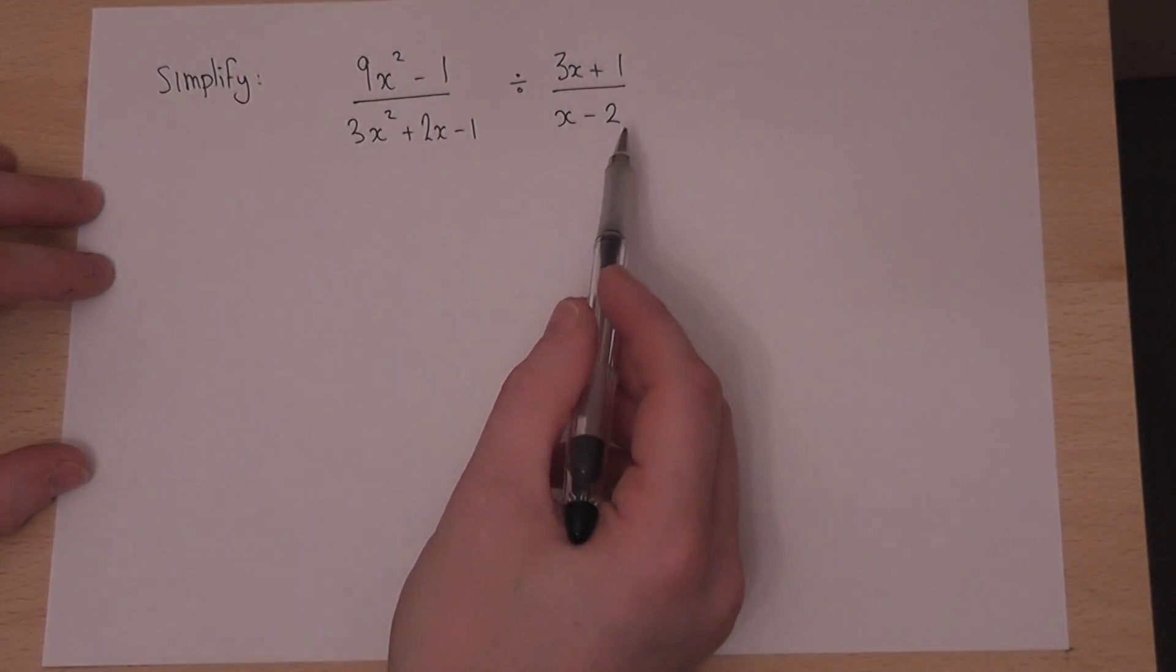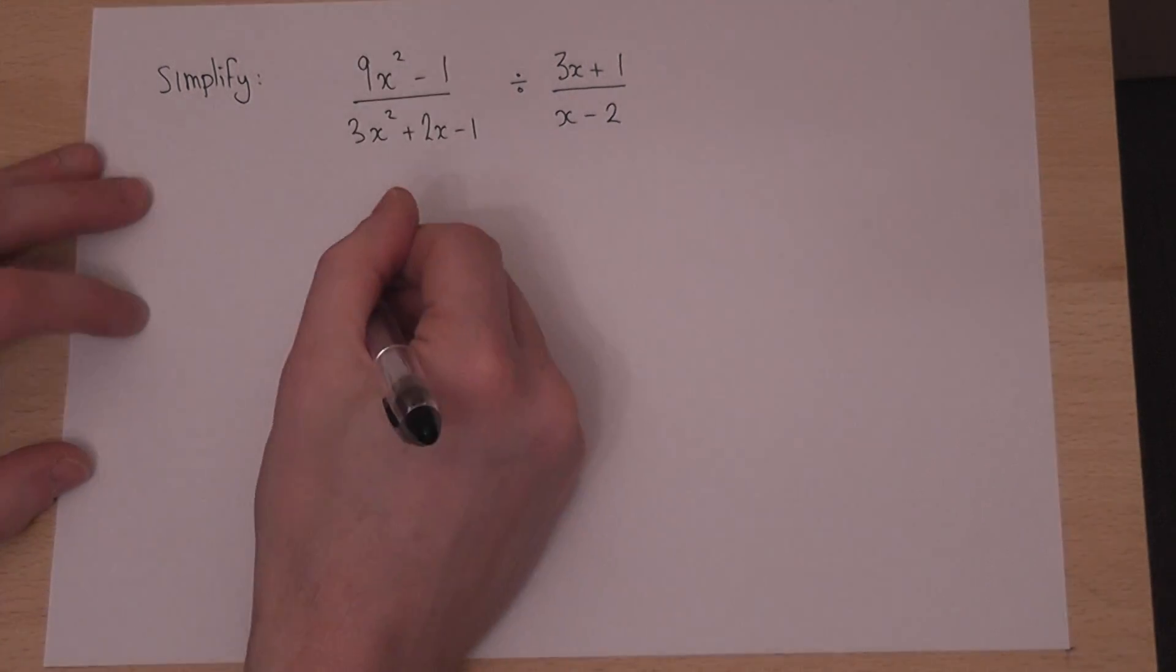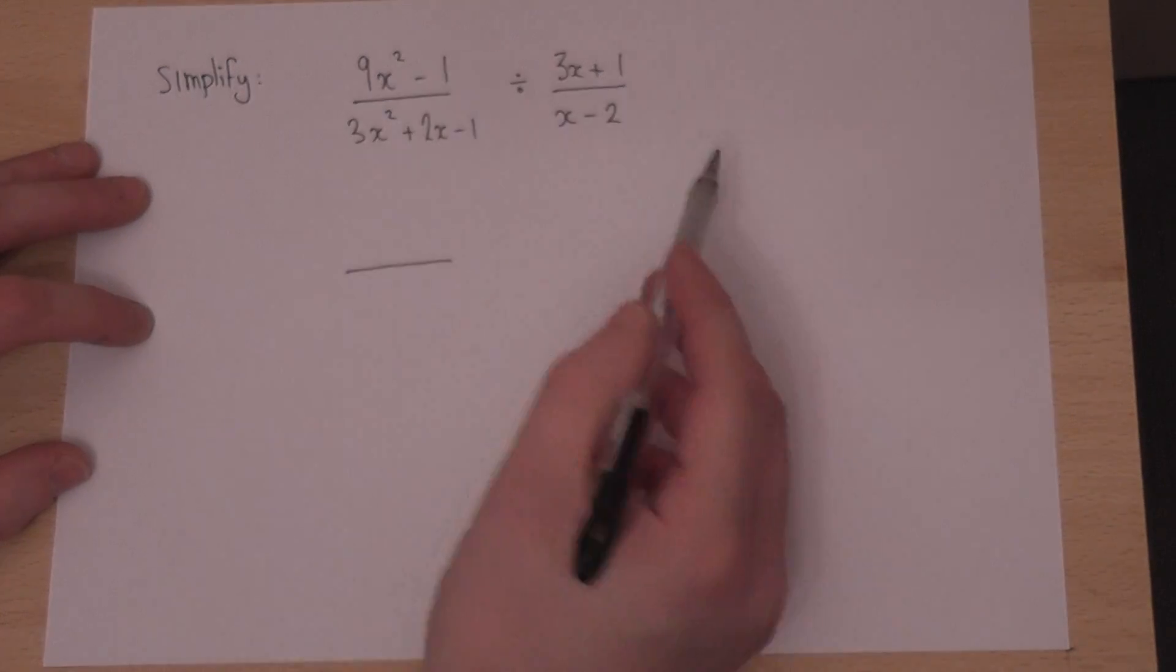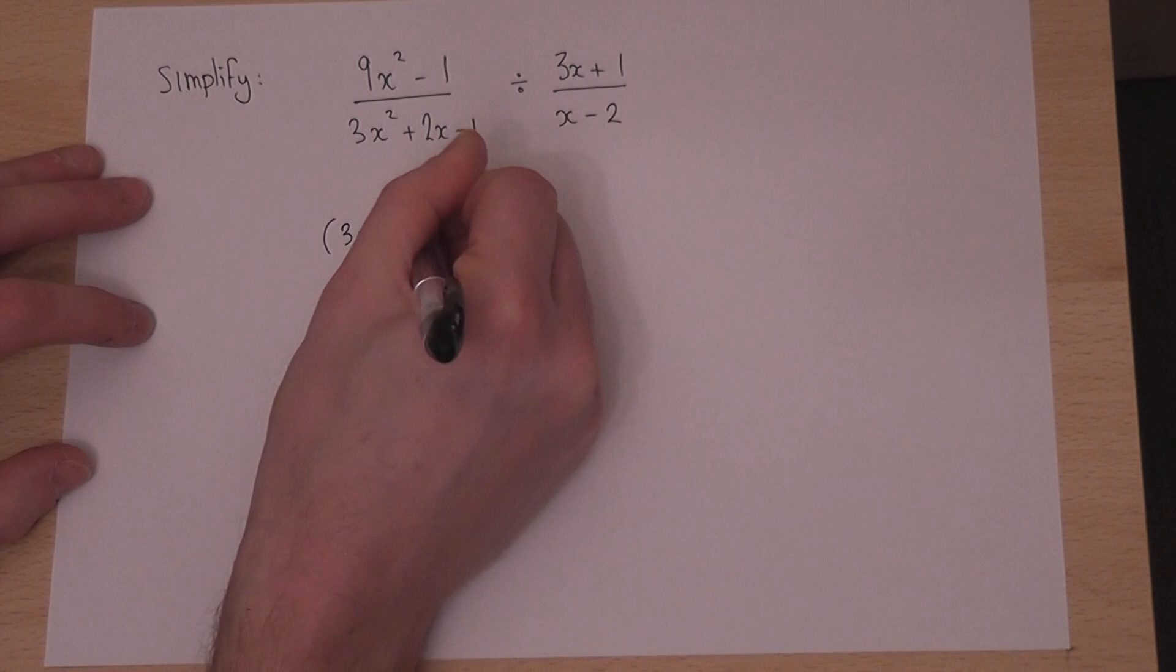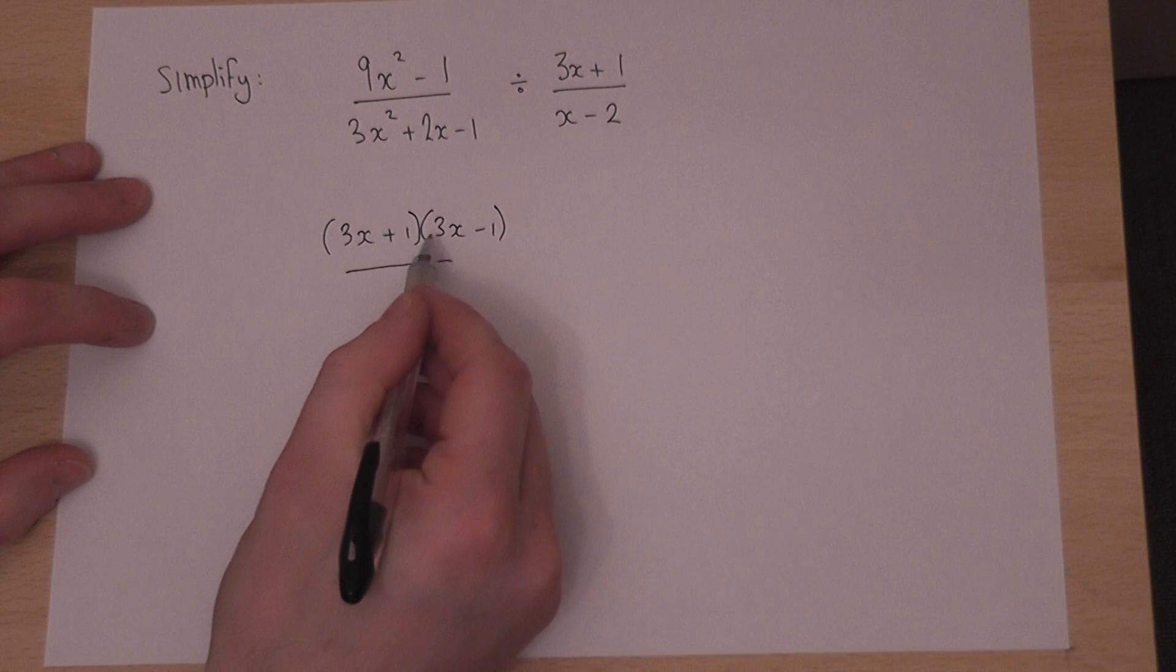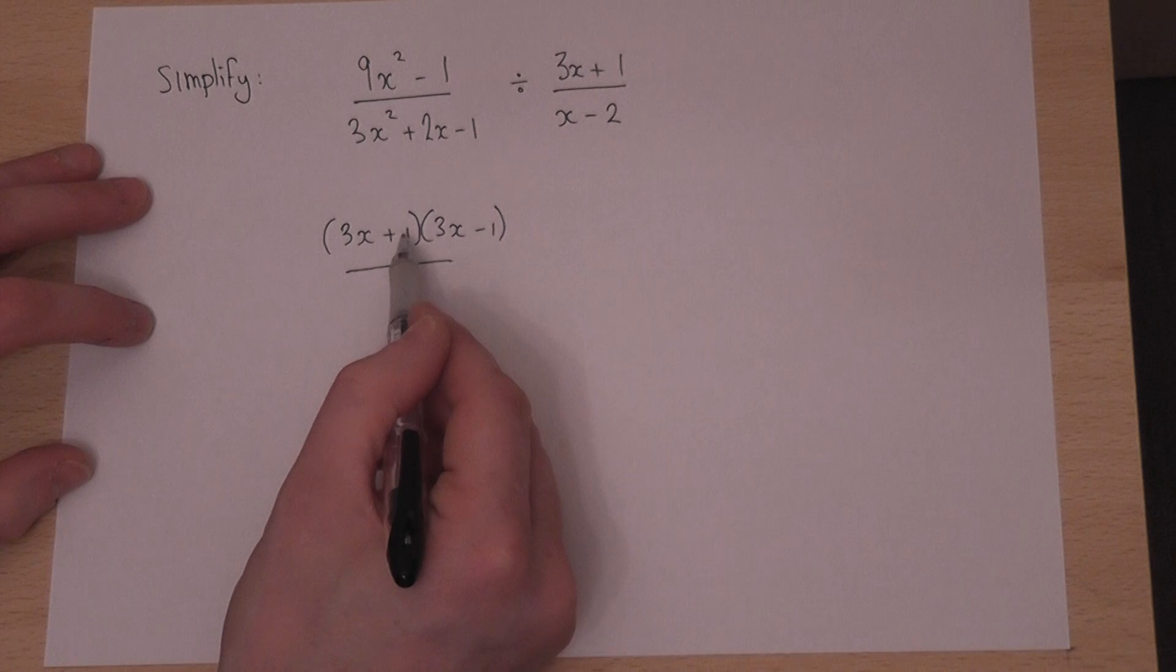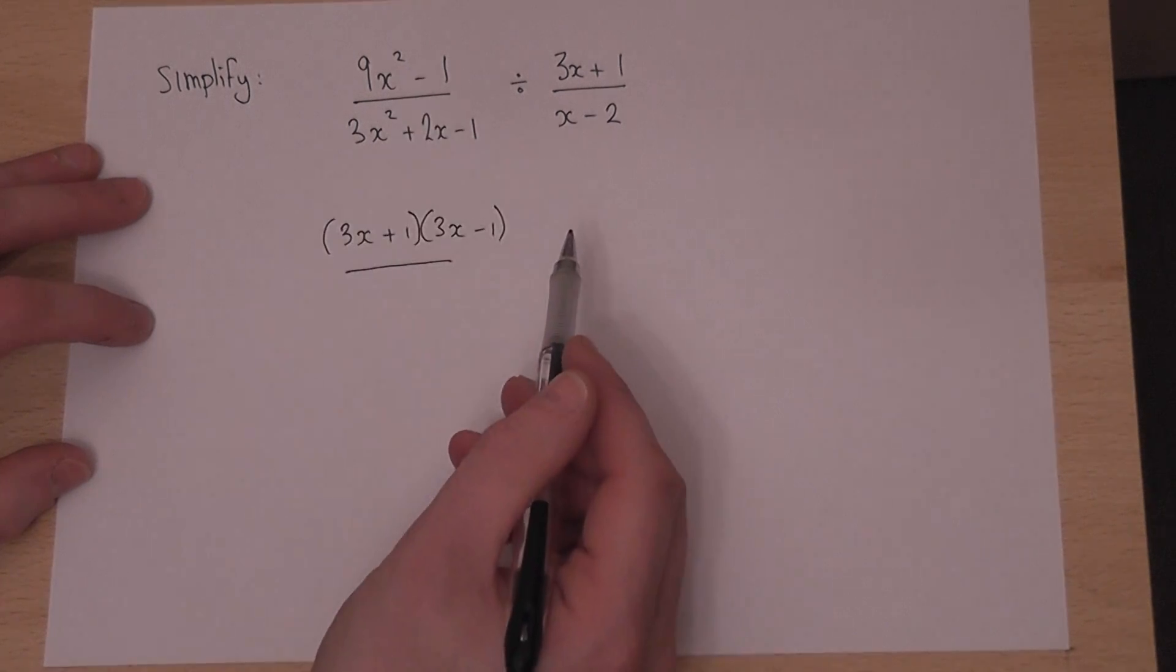Now to begin with I'm going to try to factorise the fraction on the left. The top of the fraction is the difference of two squares. 9 and 1 are both square numbers. So I can write that as 3x plus 1 and 3x minus 1. 3x times 3x is 9x squared. 1 times minus 1 is minus 1. And 3x, take away 3x, gives no x's. So the top has been factorised.